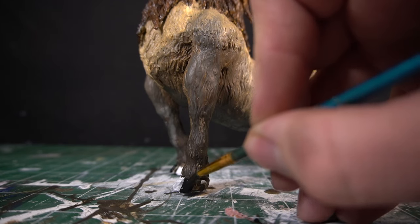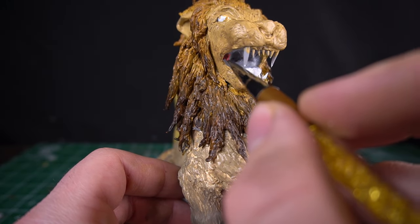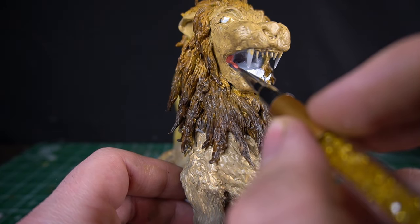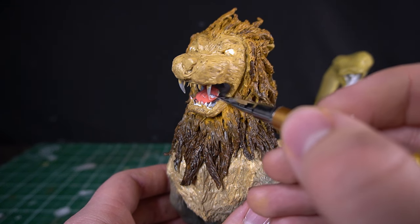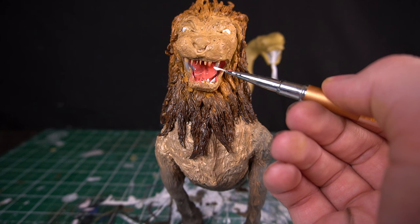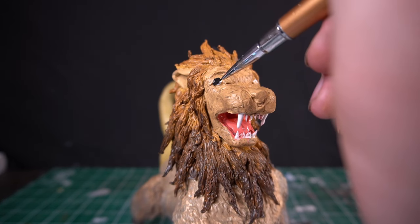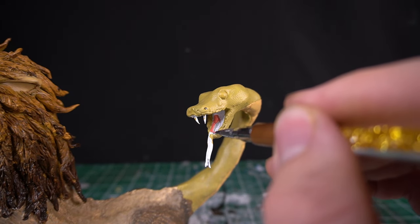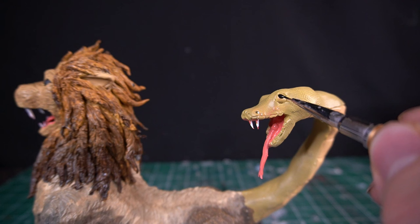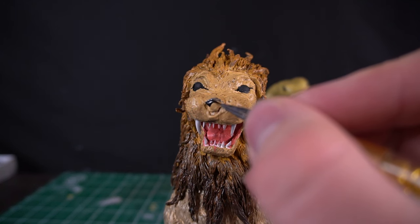Now his hooves get painted black. His tongue and the inside of his mouth get painted a pinky red color. And his teeth get painted pure white. The lion's eyes are black. The snake's tongue is pink, just like the lion's. His eyes are black, just like the lion's.